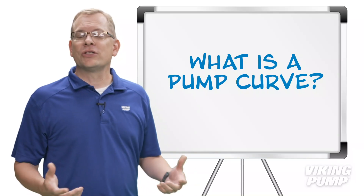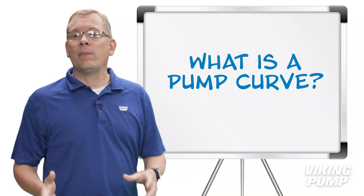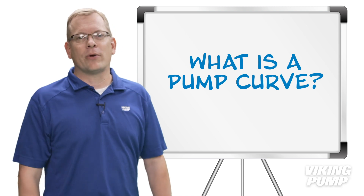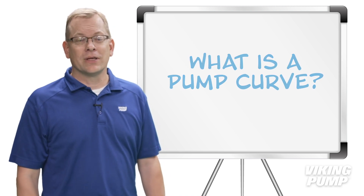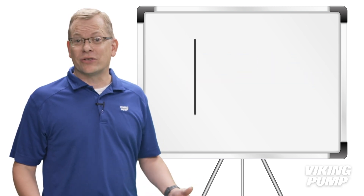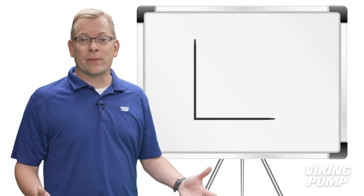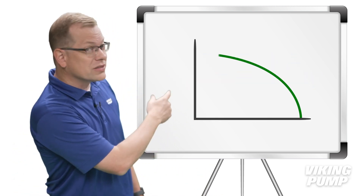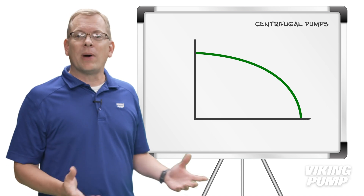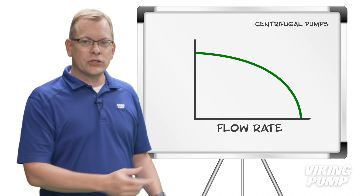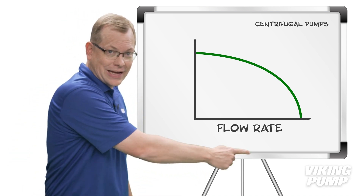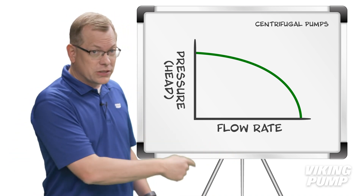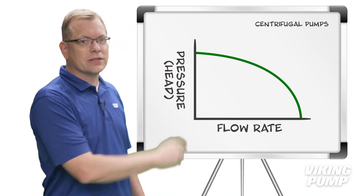A pump curve is a chart showing how a pump would perform at a given set of operating conditions. A quick internet search for a typical pump curve and you'll likely see something like this. The pump's flow rate is charted along the x-axis, and the head or pressure is along the y-axis.